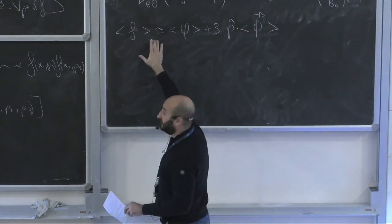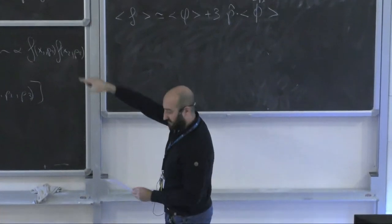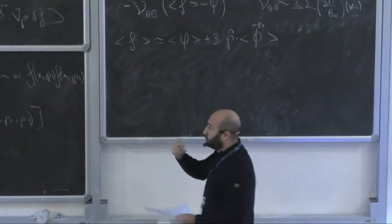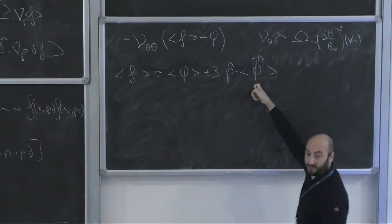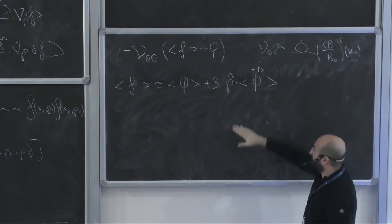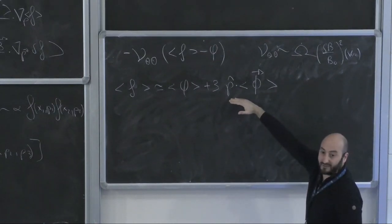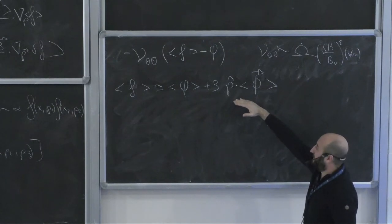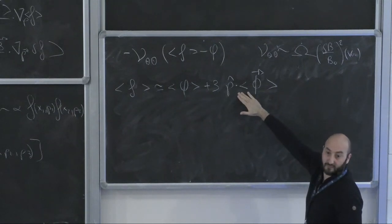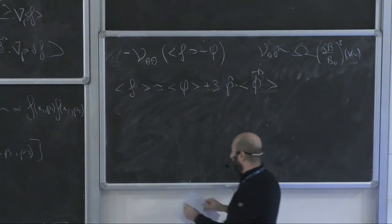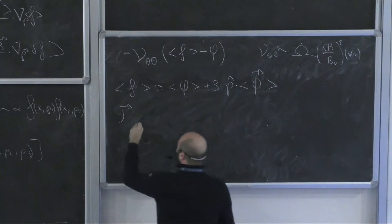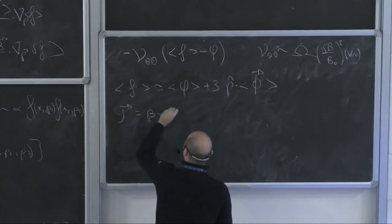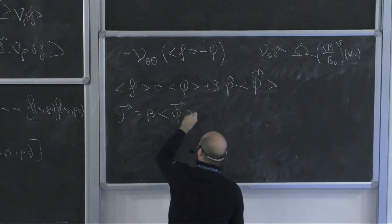If you plug this expansion into the previous equation, you get two equations — one for the monopole φ and one for the dipole Φ. The dipole term is equivalent to a current term. In fact, the formal definition of the current associated to the cosmic rays is nothing but β times the average of the vector Φ. So you can write f in terms of φ or in terms of the current density.